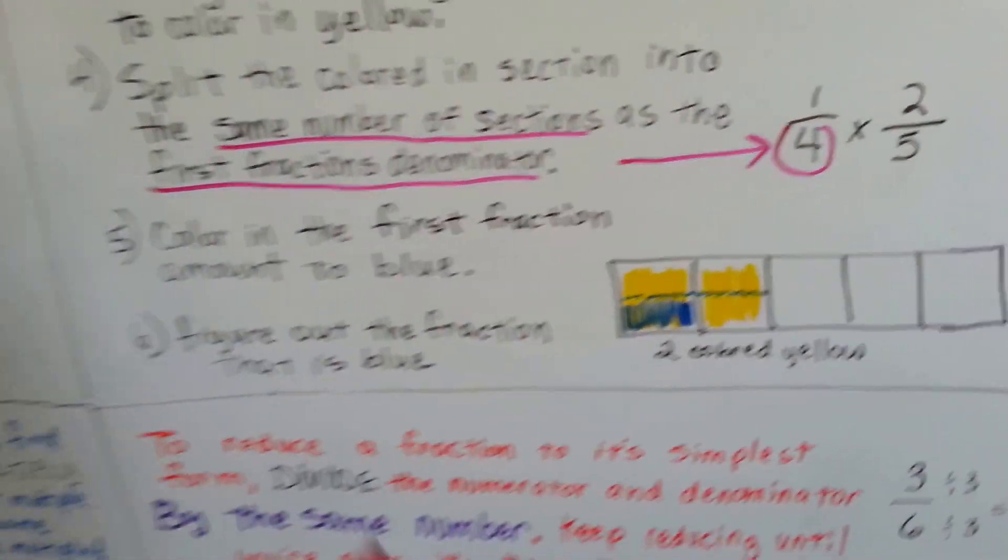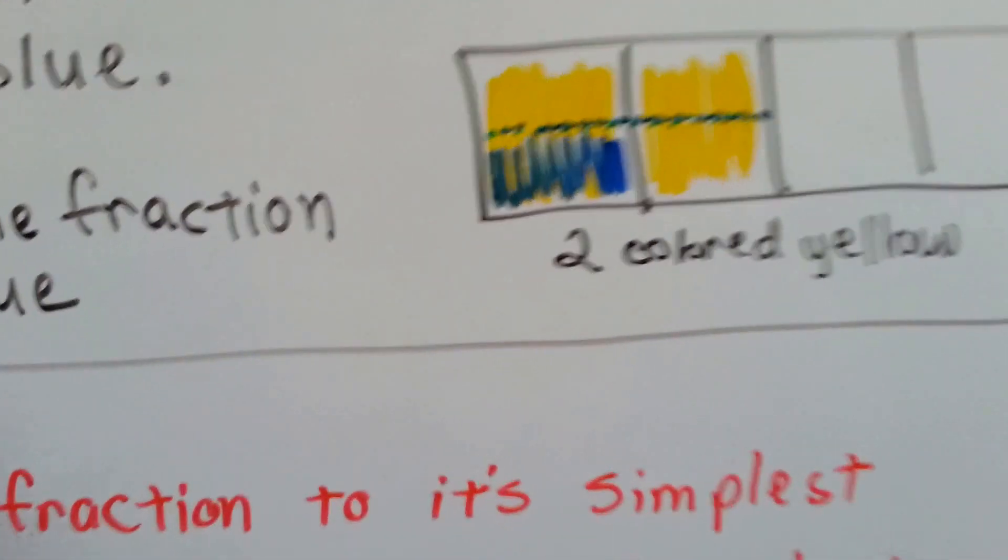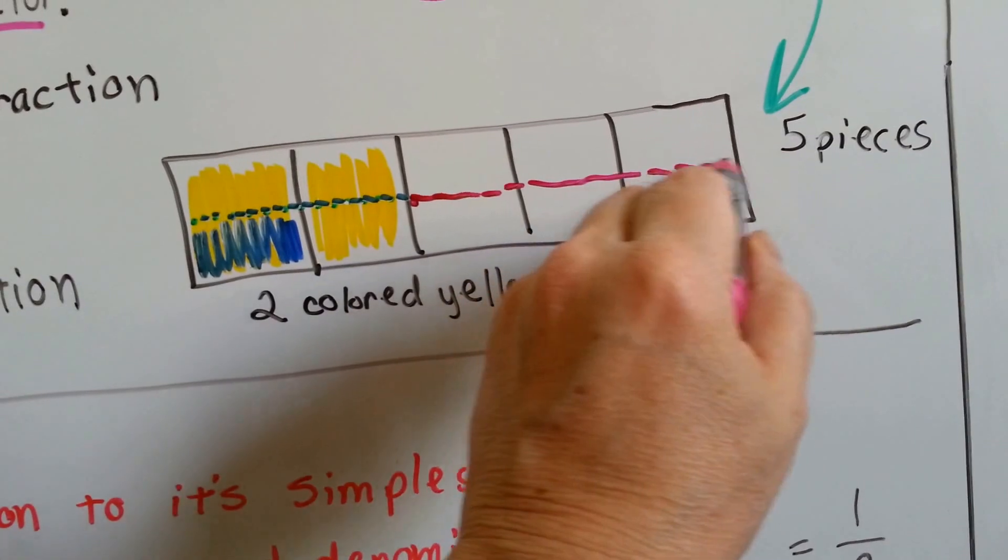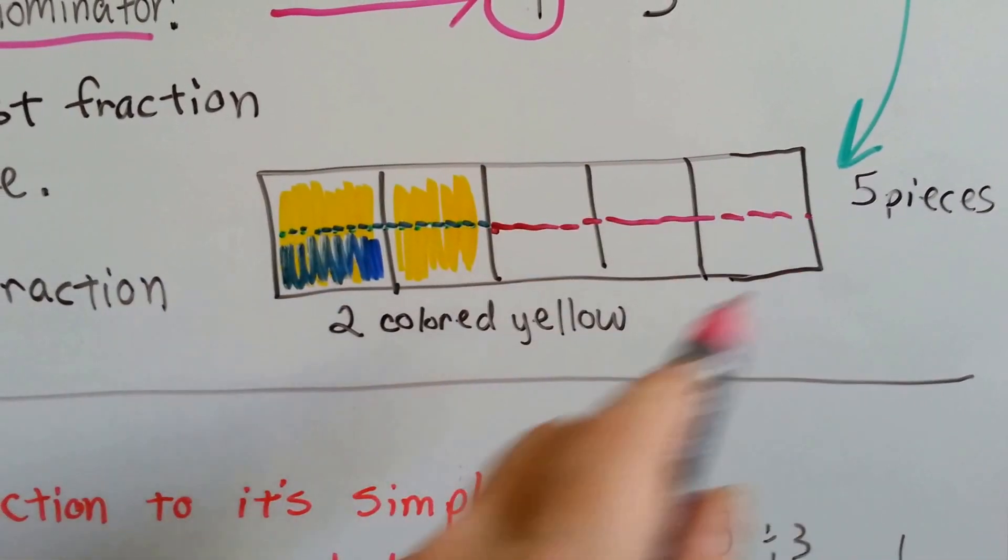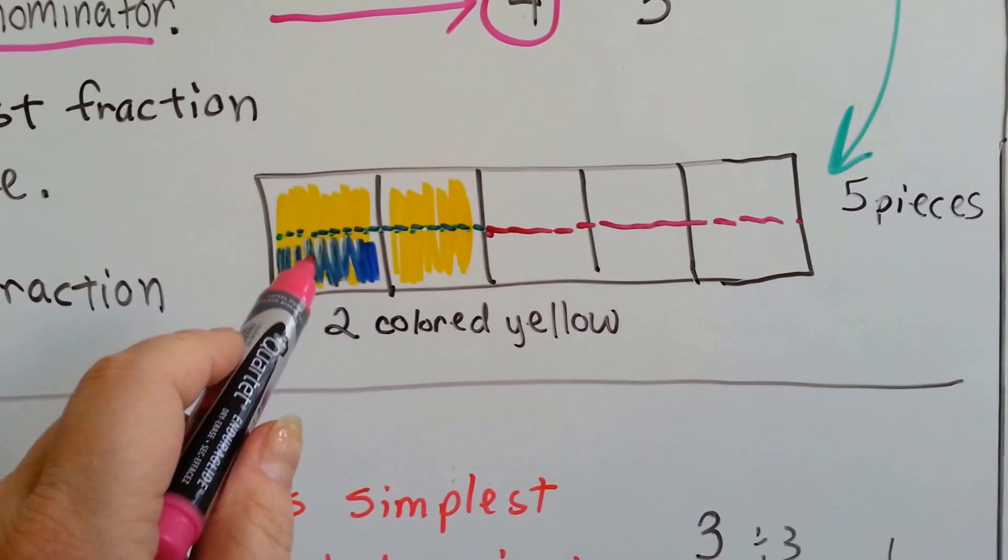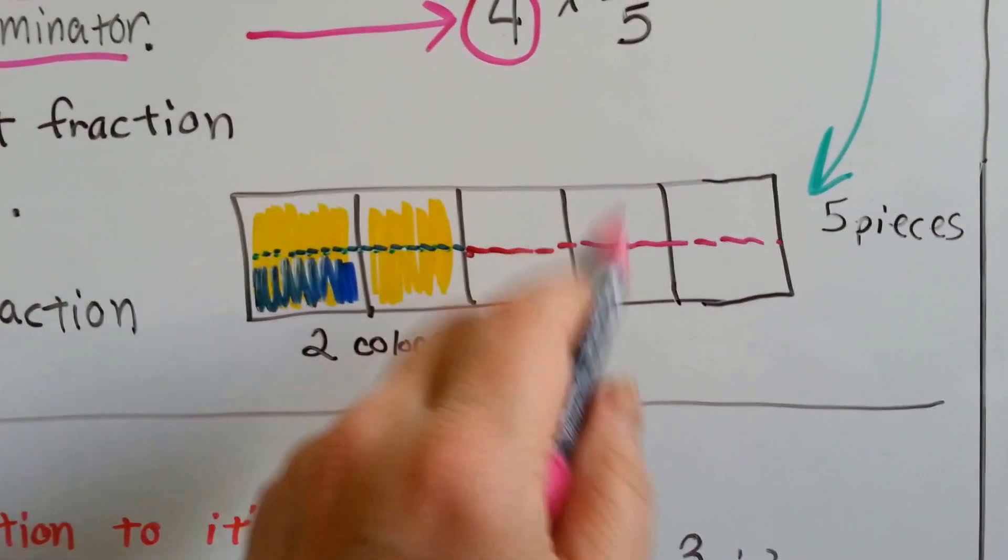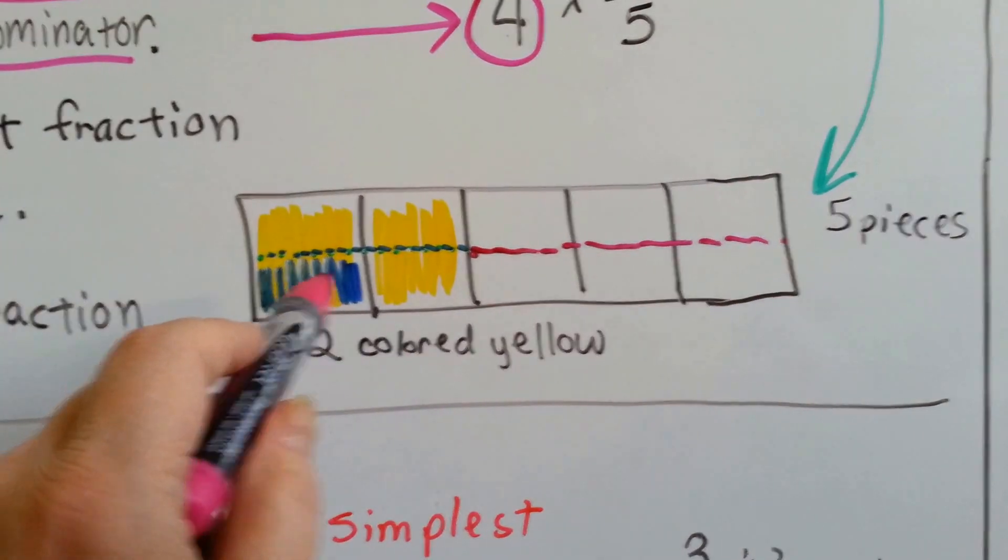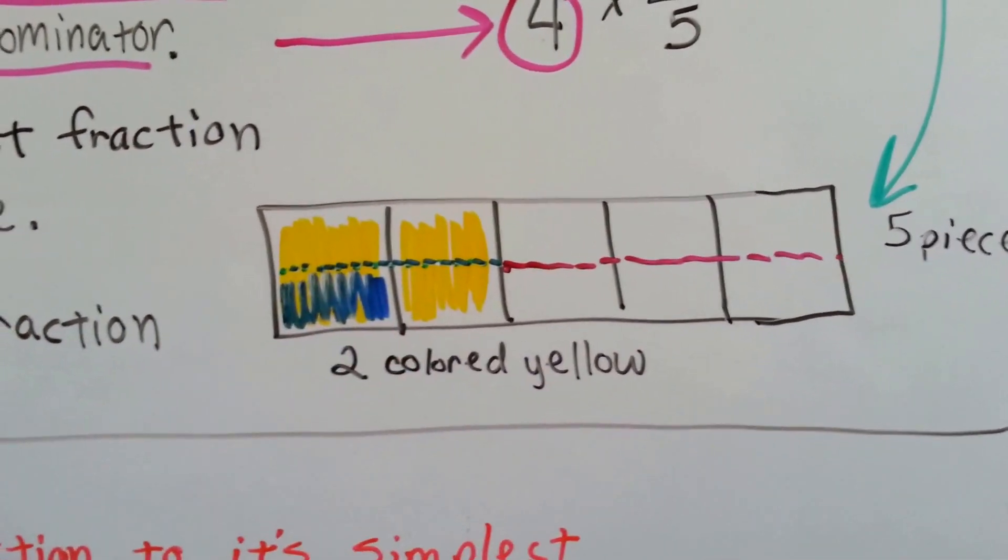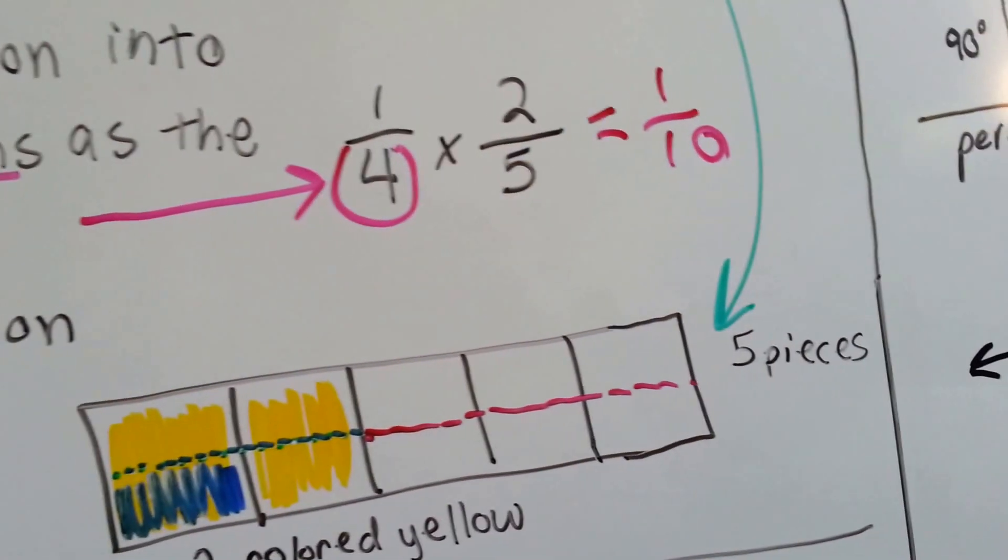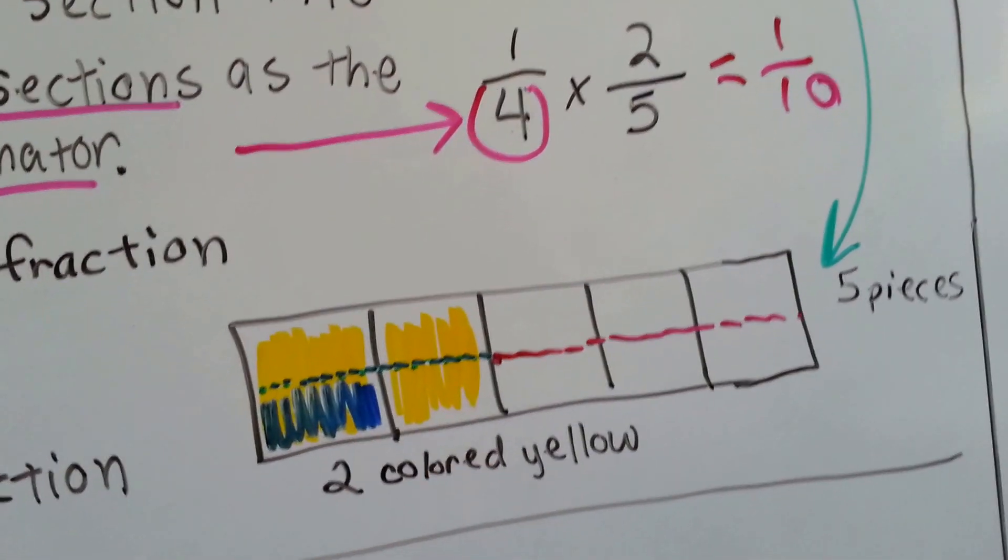So now, figure out the fraction that's blue. So if you look at this bar, and we extended this line going this way to split it up, how much of the bar is blue? How many pieces are there? 2, 4, 6, 8, 10. And 1 of the 10 pieces is blue. So 1 fourth times 2 fifths equals 1 tenth.